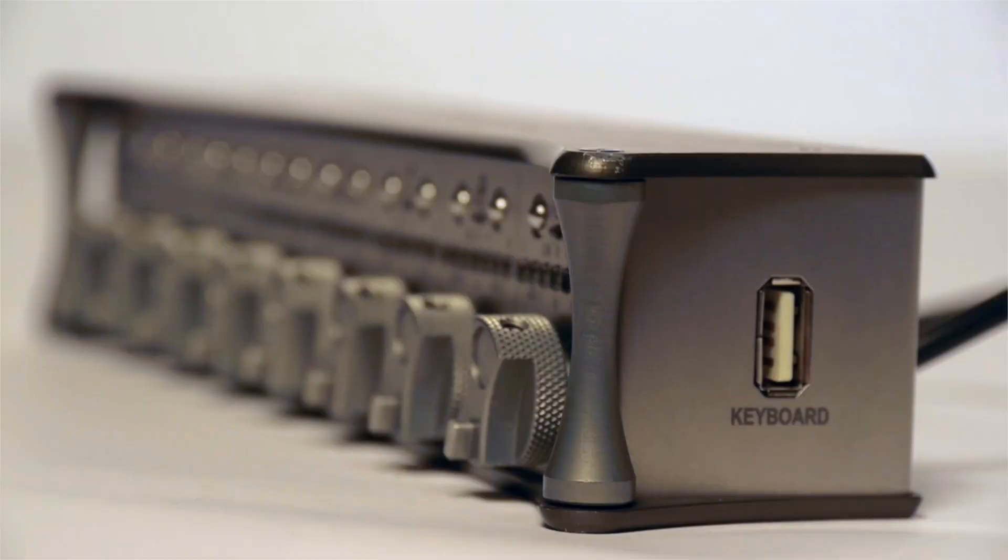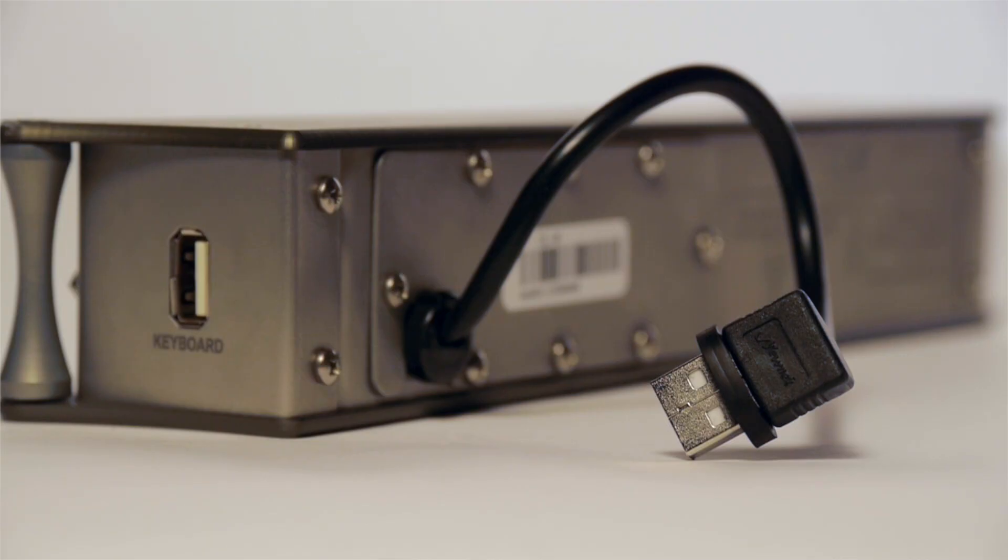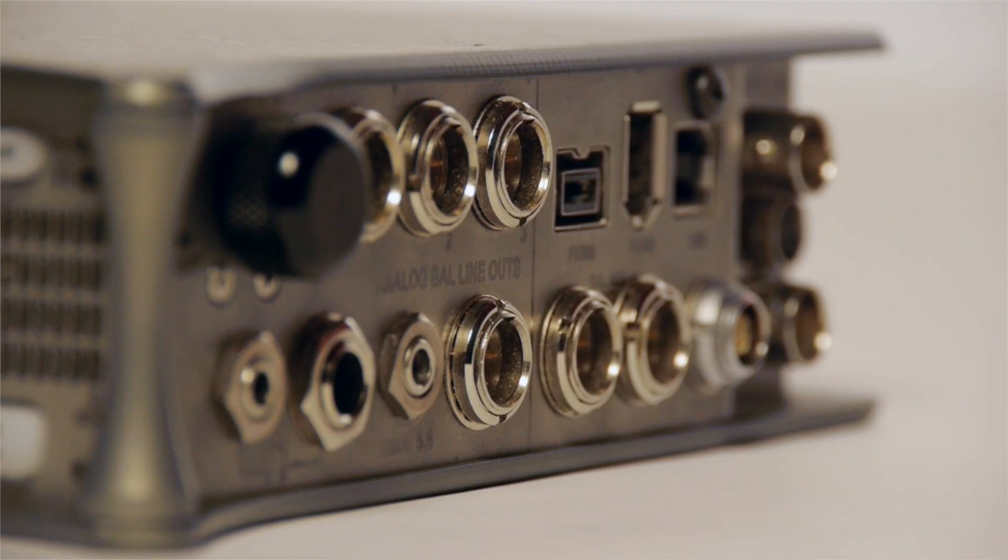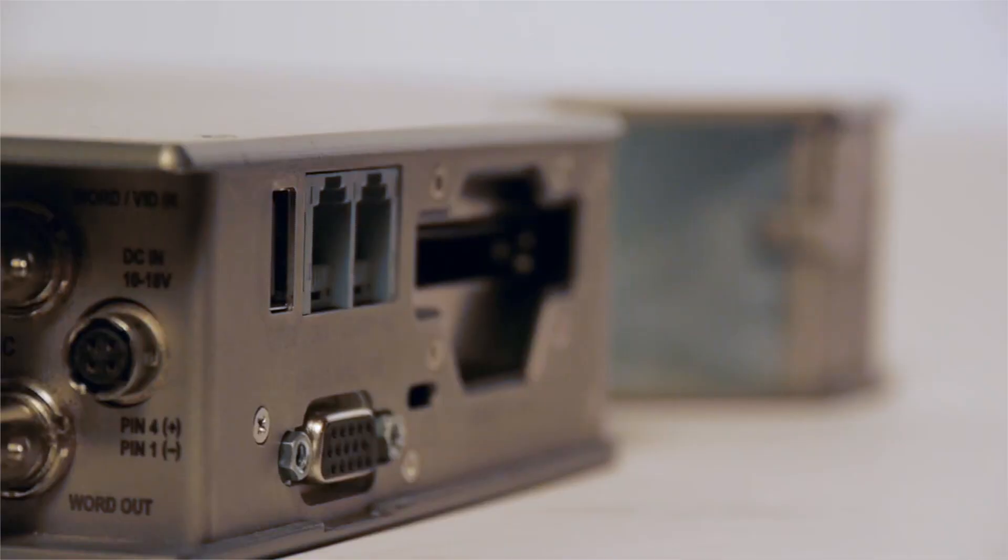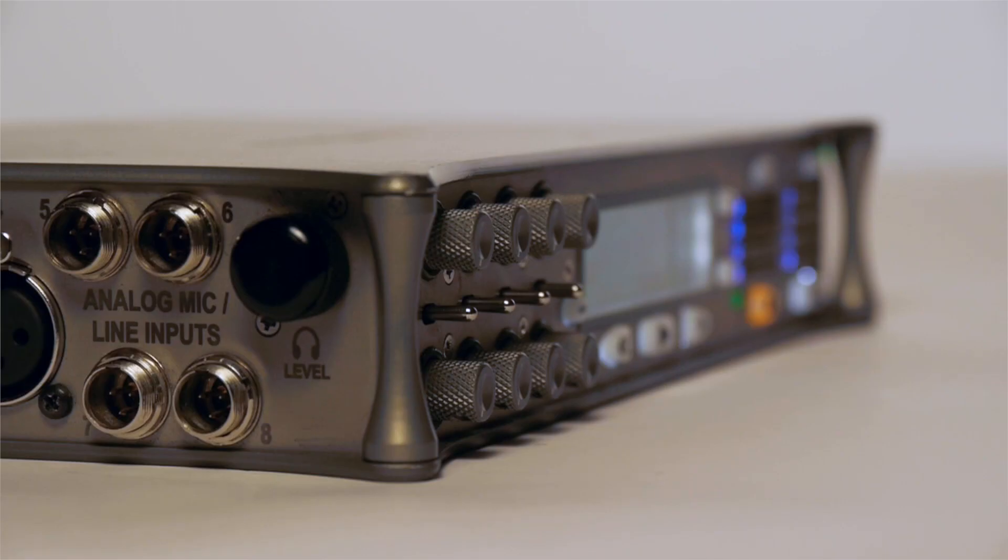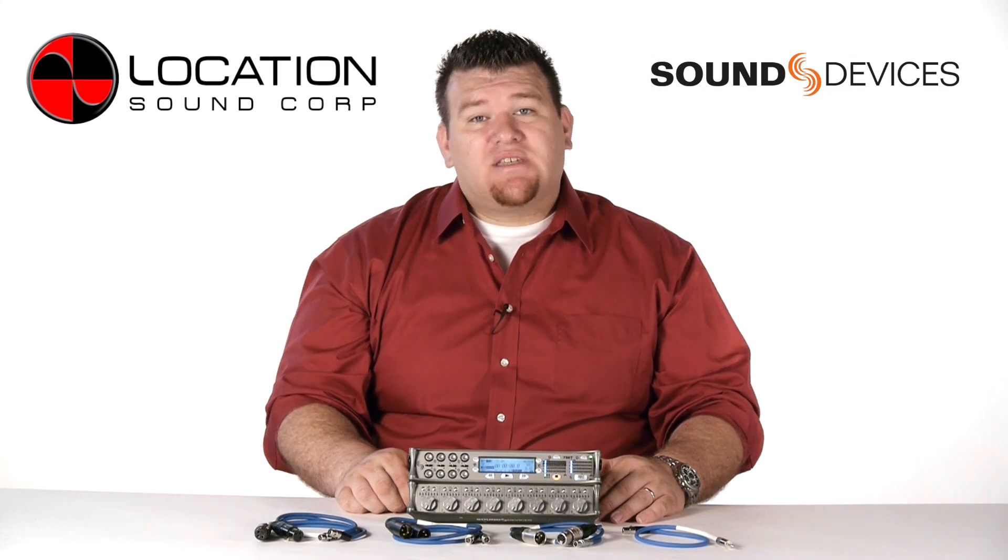The Sound Devices 788T is an 8-input 12-track recorder that can generate or receive time code. In my opinion, it's one of the most durable, reliable, dependable, and widely used recorders in production field recording today. So without further ado, let's get started.